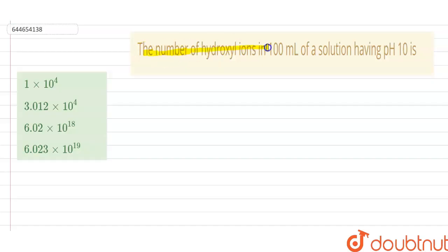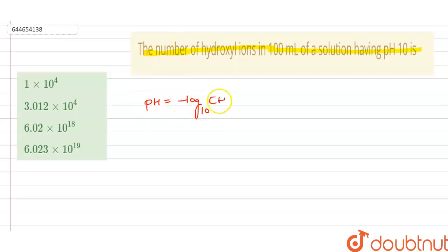Our question is: the number of hydroxyl ions present in 100 ml of a solution having pH 10 is what? First of all, we have to know the meaning of pH. pH is defined as the minus log base 10 of H⁺ ion concentration, where concentration is defined as the number of moles of solute dissolved per liter of solution.